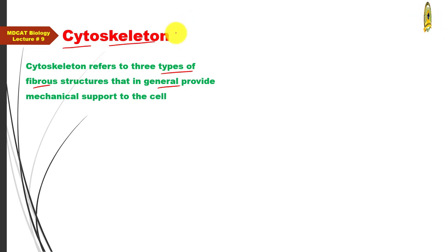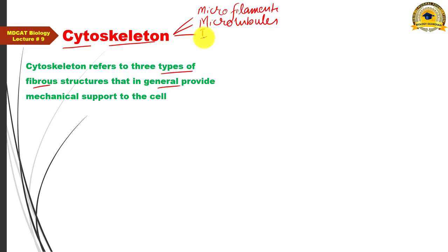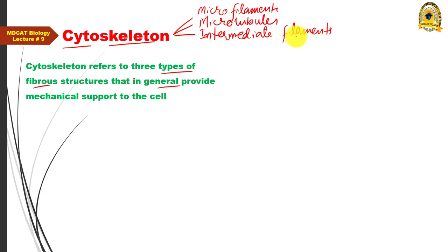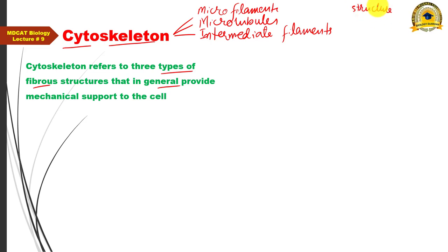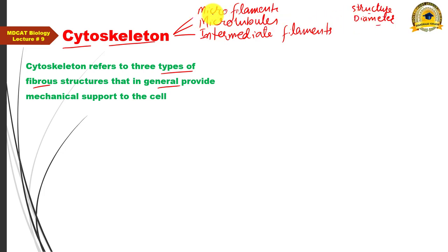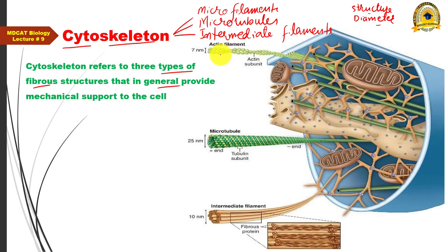The three types of cytoskeletal fibers are: microfilaments, microtubules, and intermediate filaments. These names are based on their structure and diameter — some are tubular and hollow, others are solid fibers, and their diameters differ. Based on these structural differences, they are designated as microfilaments, microtubules, or intermediate filaments.